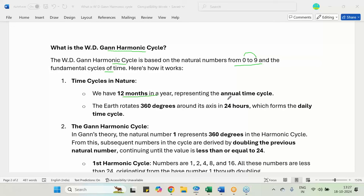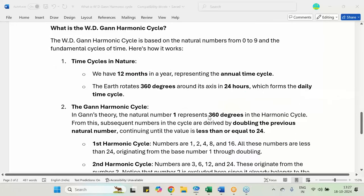We have 12 months in a year, representing the annual time cycle. The earth rotates 360 degrees around its axis in 24 hours, which forms the daily time cycle. This particular 360 degrees represents 24 hours. W.D. Gann says that the natural number 1 represents the 360 degrees. That means the daily time cycle - one day which includes the daytime and nighttime together represents 360 degrees. This is known as your harmonic cycle.